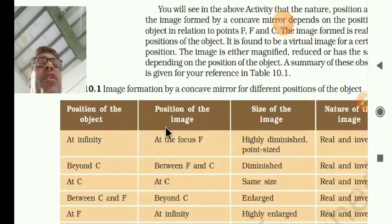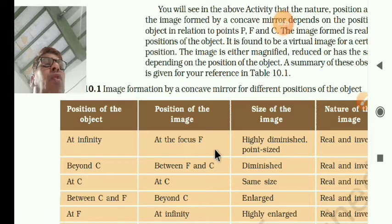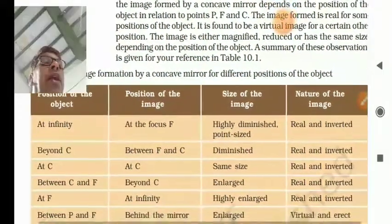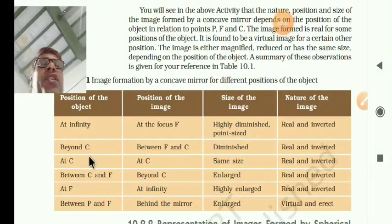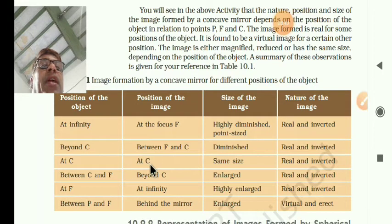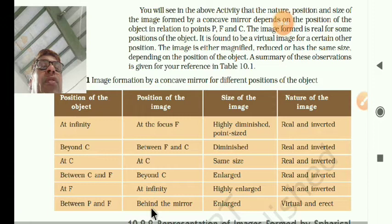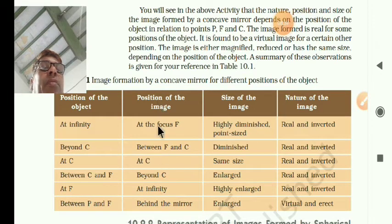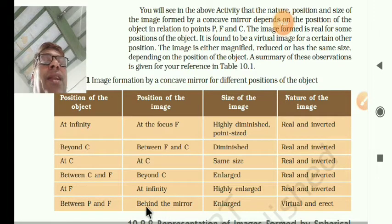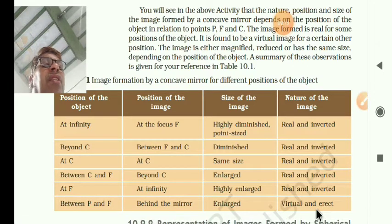You have to remember this table. At infinity, the image is formed at focus F — highly diminished, point-sized, real and inverted. Beyond C, the image forms between F and C — diminished, real and inverted. At C, the image is at C — same size, real and inverted. Between C and F, the image forms beyond C — enlarged, real and inverted. At F, the image is at infinity — highly enlarged, real and inverted. Between P and F, the image forms behind the mirror — enlarged, virtual and erect.